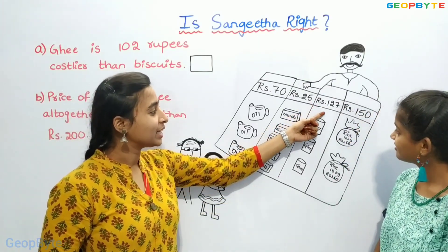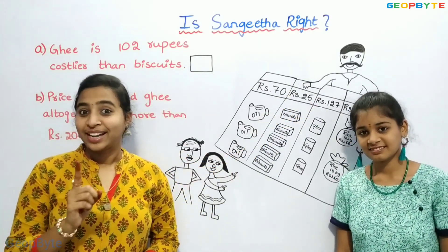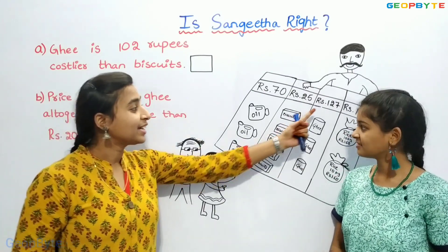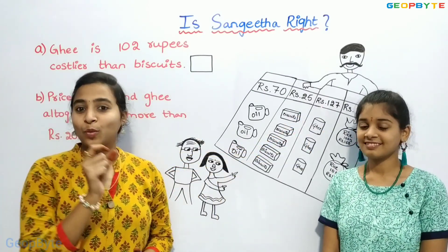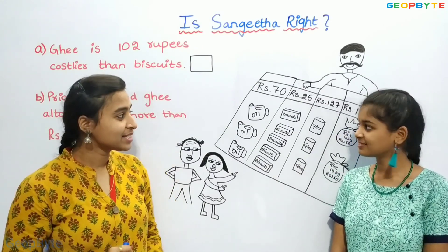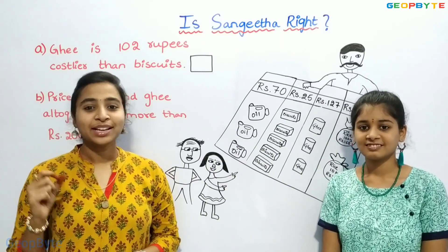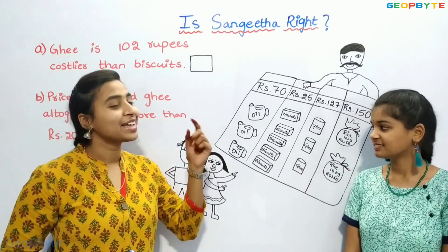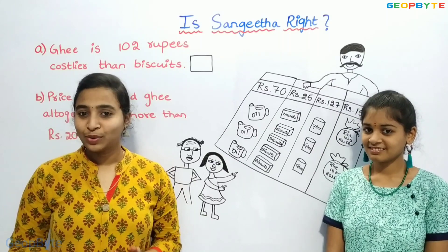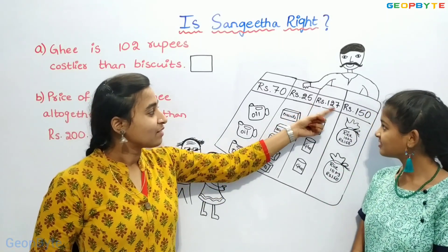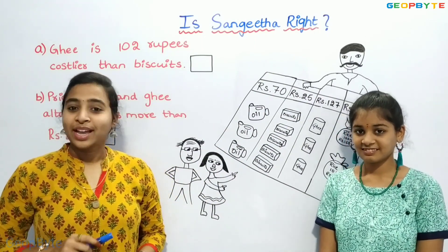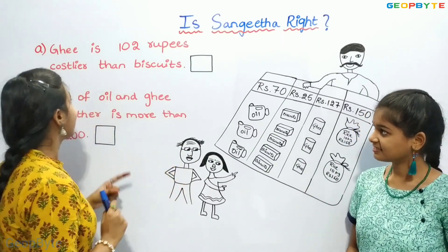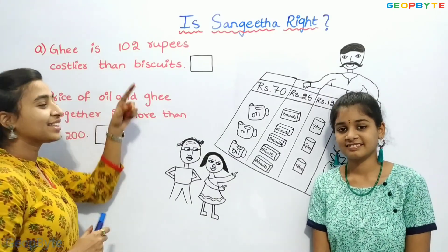Let us do this sum without using book and pencil. Children, let us split 127 into 120 plus 7, minus 25 as 20 plus 5. Now, first let us subtract 120 minus 20. 120 minus 20 is 100 and 7 minus 5 is 2. 100 plus 2 is 102. So, what Sangeeta said is right. That is, Ghee is 102 rupees costlier than biscuits.